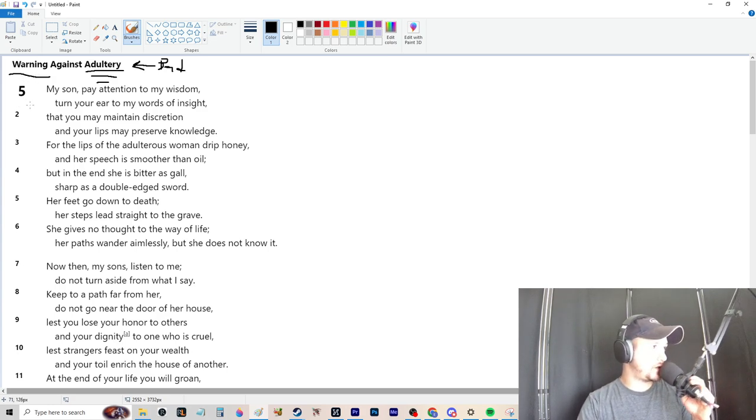My son, pay attention to my wisdom, turn your ear to my words of insight, that you may maintain discretion, and your lips may preserve knowledge. For the lips of the adulterous woman drip honey, and her speech is smoother than oil, but in the end she's bitter as gall, sharp as a two-edged sword. Her feet go down to death, her steps lead straight to the grave, she gives no thought to the way of life. Her paths wander aimlessly, but she does not know it.